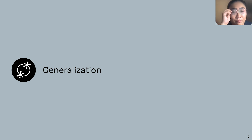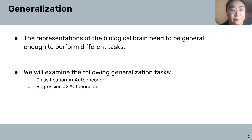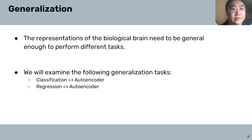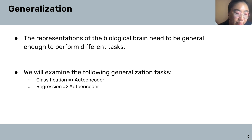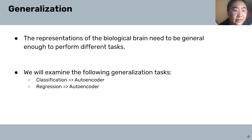In the second part, we will look at the generalization performance of neural networks. So why at all would we like to generalize? This is because the representations of the biological brain need to be general enough to perform different tasks. For example, when you were a little child, you learn what an elephant looks like from a comic book or cartoon book.